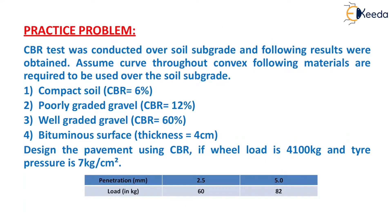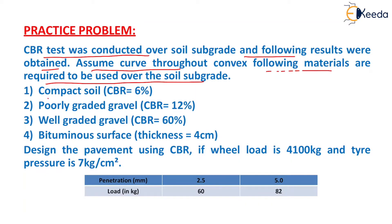The question is given as: a CBR test was conducted over soil subgrade and the following results were obtained. Assume the curve throughout is convex. The following materials are required to be used over the soil subgrade: compacted soil whose CBR value is 6%, and poorly graded gravel whose CBR value is 12%.